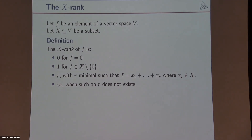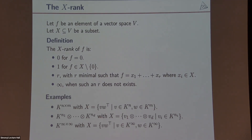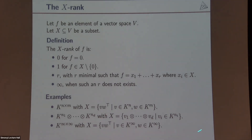If you do this you will not always get something interesting, but sometimes you do. For example, if you start with matrices over a field k and X is the set of rank-one matrices, the rank you get is just the normal matrix rank. Similarly, if you take tensors and X is the set of rank-one elements, you get tensor rank.